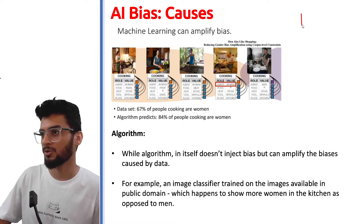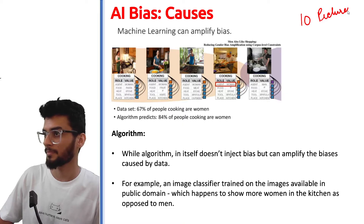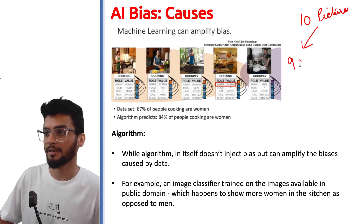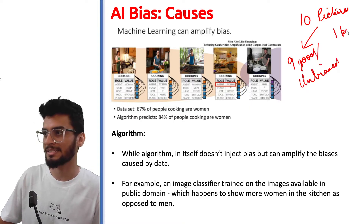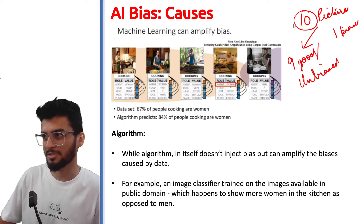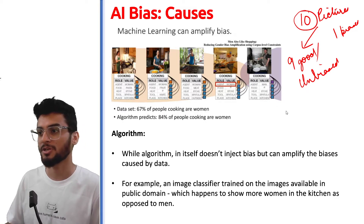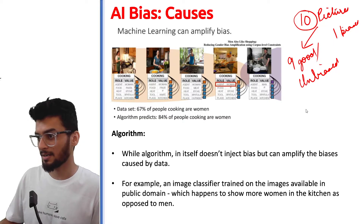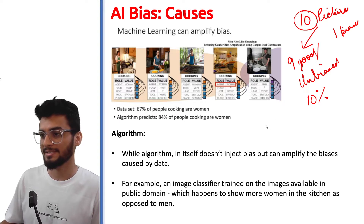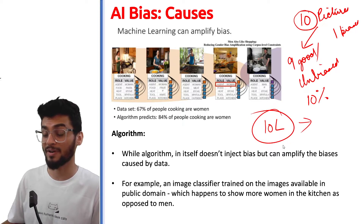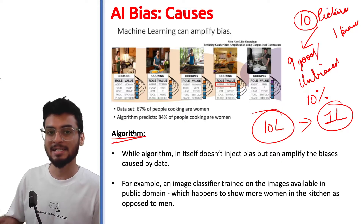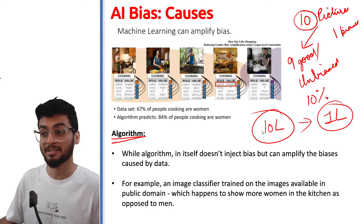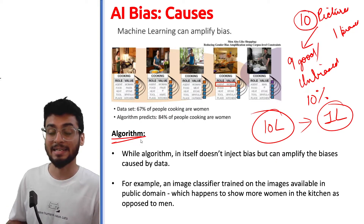Another cause can be in the algorithm itself. Let's say you have 10 pictures — out of these 10 pictures, 9 are good and unbiased, but one is actually biased. If only one picture is biased out of 10, the bias percentage comes out to be 10%. Now if you have 10 lakh images and you want to find the number of biased images, it's easily 1 lakh. So the algorithm in itself does not create much bias, but when you increase the size of the dataset and the scale of prediction, all these issues can create a lot of bias.